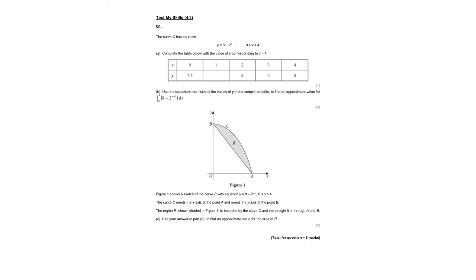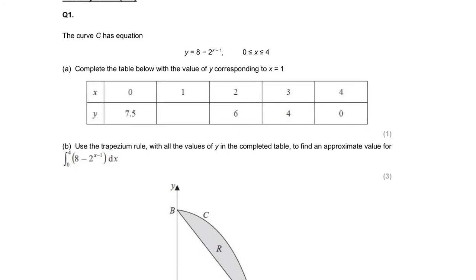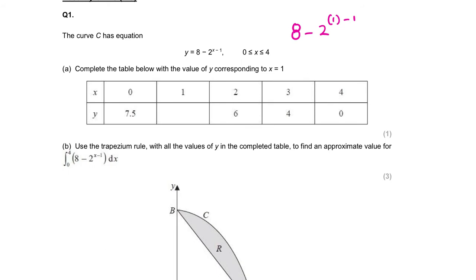So, question number one. The curve C has this equation — complete the table below with the value of Y corresponding to X equals 1. This is really simple. The biggest mistake on these types of questions is when people substitute, they do not use brackets. So, make sure that when substituting X equals 1, we're going to have 8 minus 2 lots of (1 minus 1). Wherever there's an X, you're going to have a bracket substituting. So, 8 minus 2 to the power of 0, which is 1, so 8 minus 1 is 7.